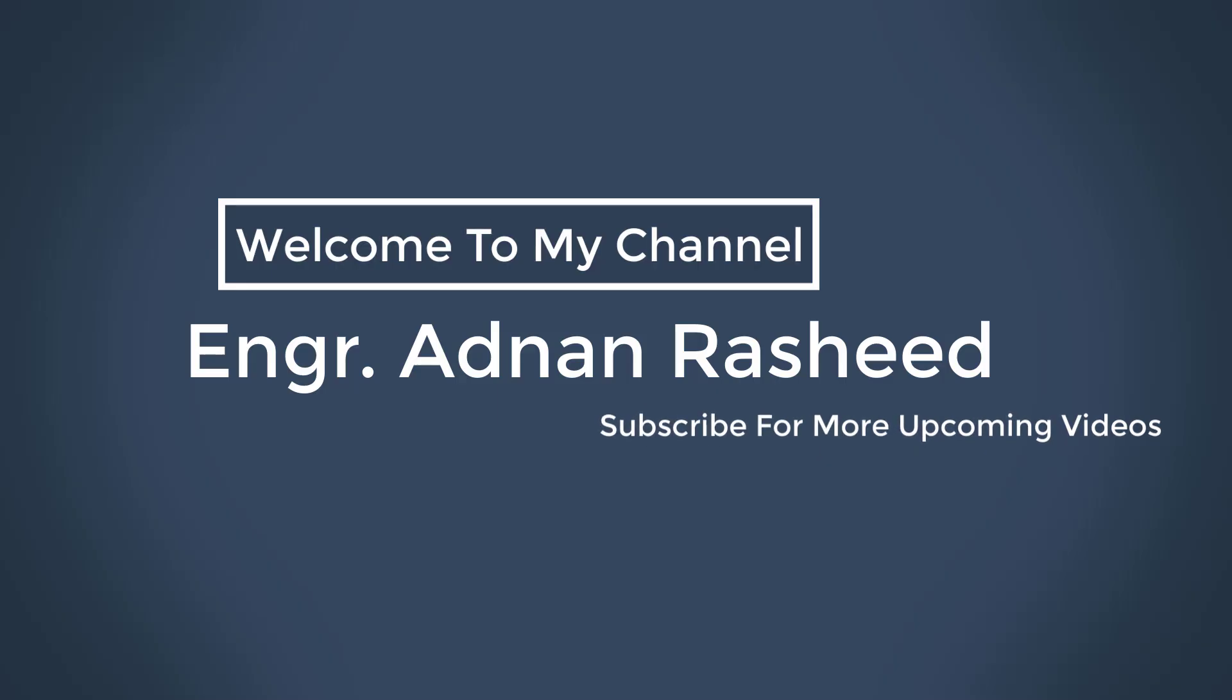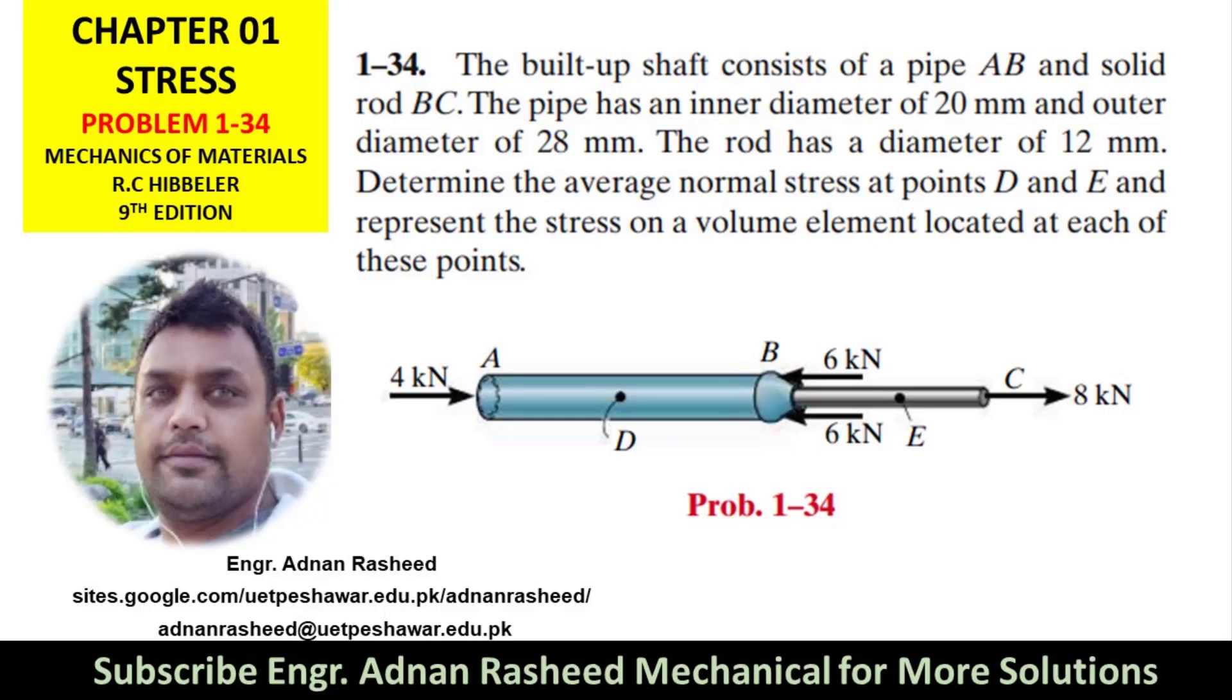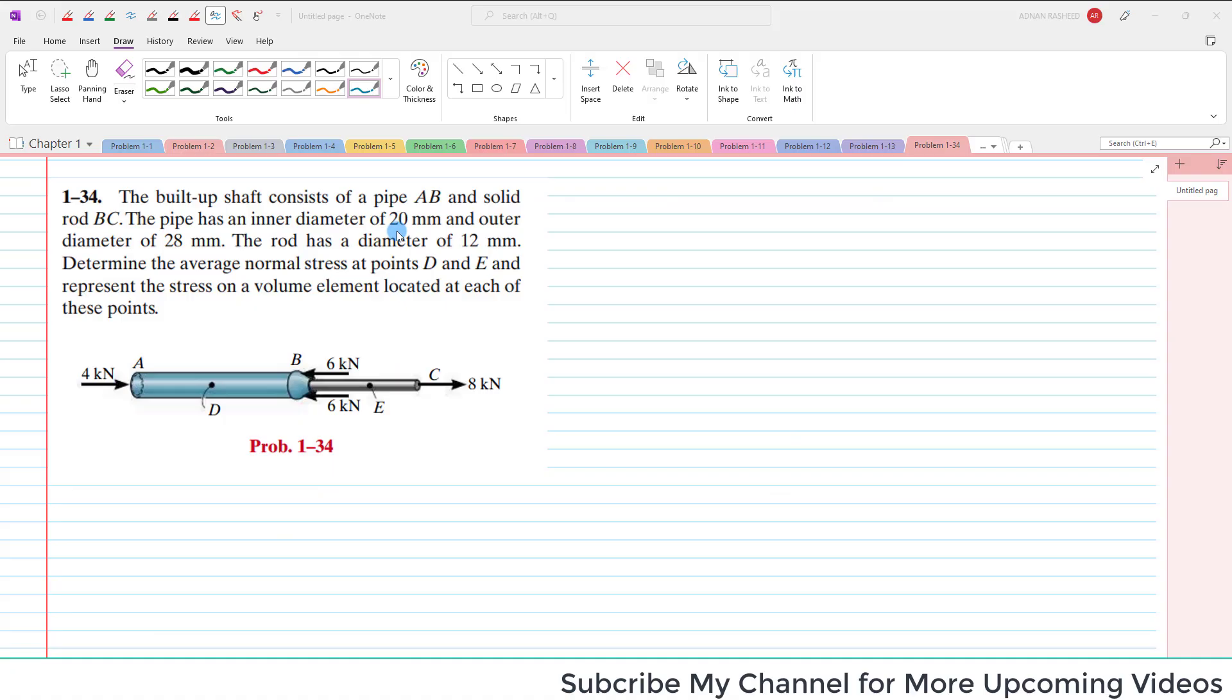Welcome to my channel. If you like my video, you can subscribe, like, and share. Thank you. Hello, welcome back. Today we will solve problem 1-34. The statement of the problem is that the built-up shaft consists of pipe AB and solid rod BC.